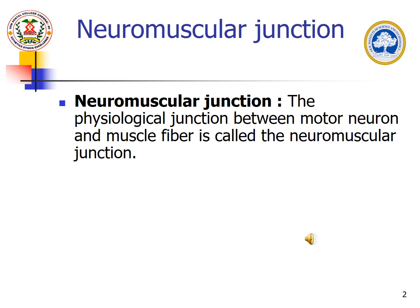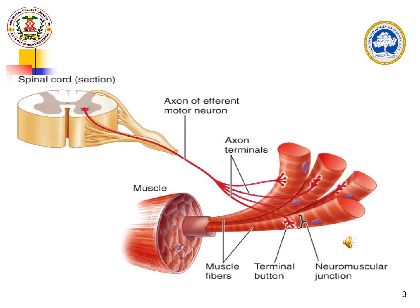The neuromuscular junction is defined as a physiological junction between the neuron and the skeletal muscle. This structure is well developed in skeletal muscle. To get a skeletal muscle action we require the signal from the neuron. The neuromuscular junction is otherwise called as the myoneural junction or motor end plate, through which the action potential will be propagated from the neuron to the muscle for its action.